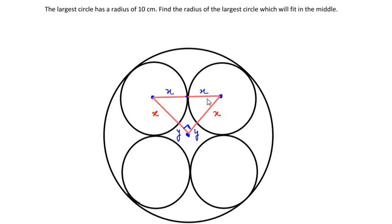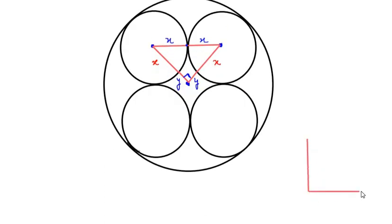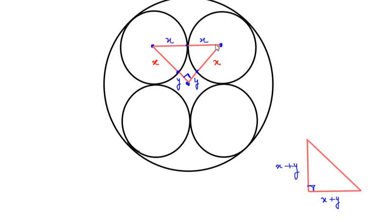Let me redraw this and show you how it looks. This side is going to be the radius x plus the distance y, so the total length is x plus y. This is 90 degrees here. The same thing happens for the other side, which is also x plus y — x is the radius and y is the distance from the circumference of the large circle to the center of the small circle. The length of the third side is x plus x, the two radii, so it is 2x.